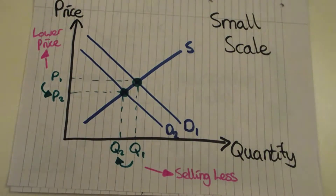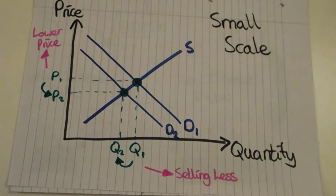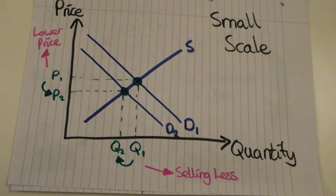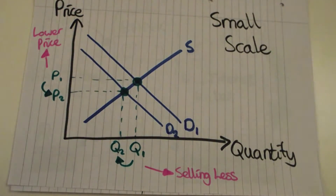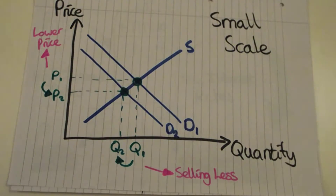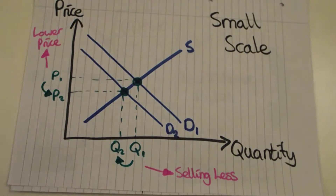This can be seen on a supply and demand diagram: when demand falls, people buy less and prices also lower. If you're a big business employing lots of people and you start selling less stuff and making lower profit because your prices are lower, you're likely to get rid of some employees or pay them less.